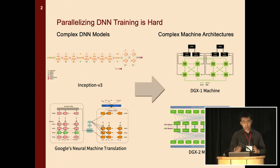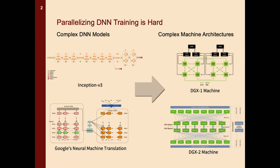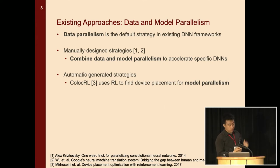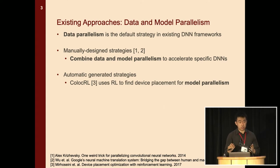Parallelizing deep neural network training is a hard problem, and previous talks have already explained why. Most existing approaches have been focusing on data and model parallelism to distribute training. Data parallelism is the default choice in most existing frameworks, and people have introduced manually designed strategies combining data and model parallelism. Previous work has also introduced automatically generated strategies — for example, Google proposed ColocRIO, which uses reinforcement learning to find device placement in model parallelism.